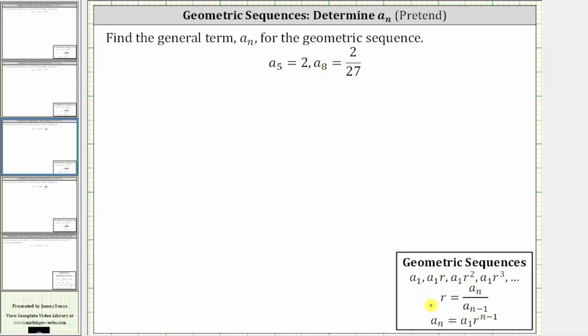We also can't use this formula for r because we don't have two consecutive terms in the sequence. So we are given that a_5 is equal to 2 and a_8 is equal to 2/27. And the formula for a_n is a_n equals a_1 times r raised to the power of n minus 1.